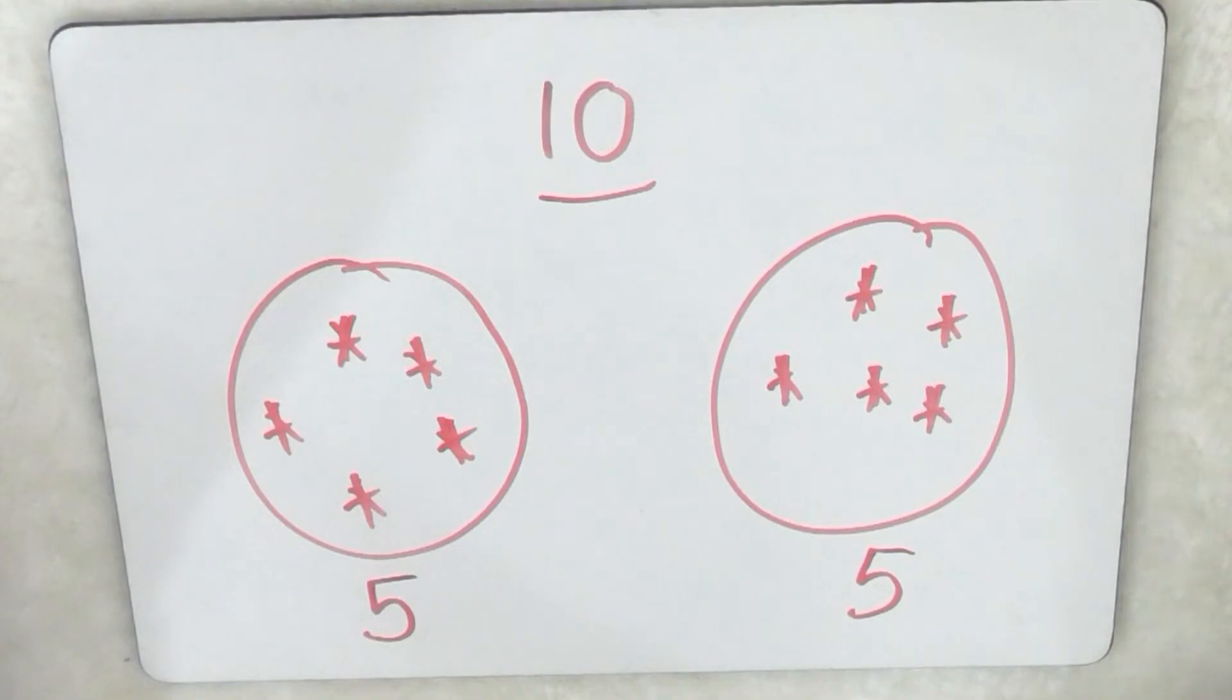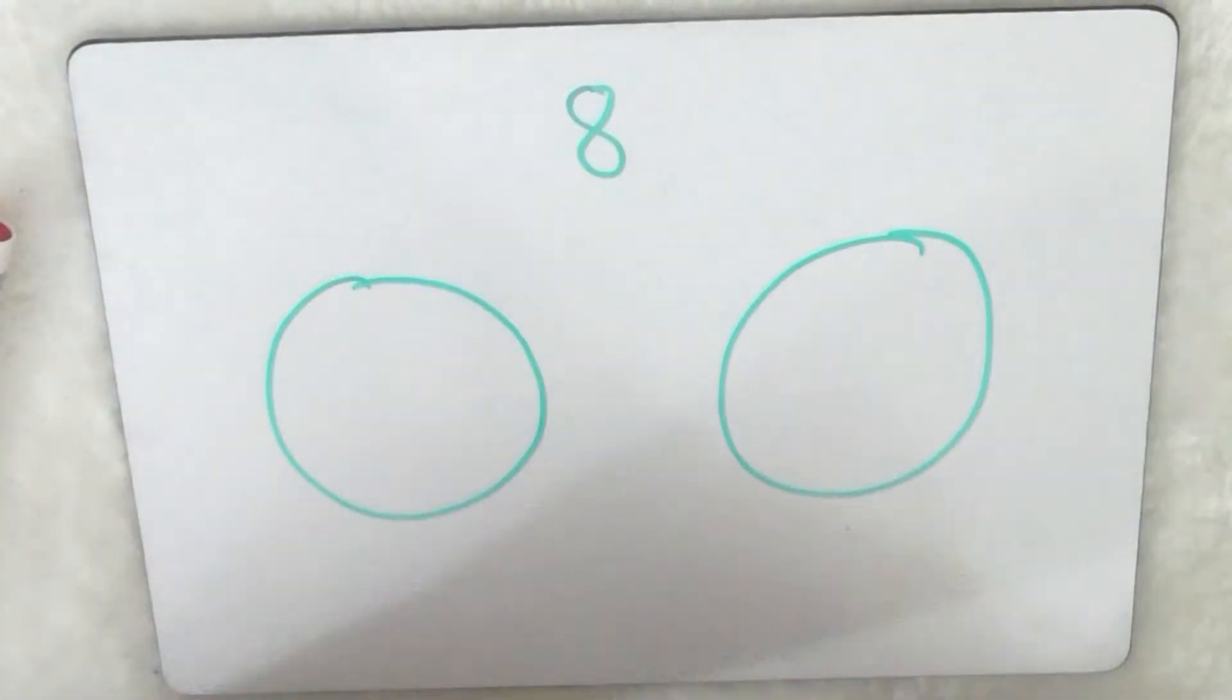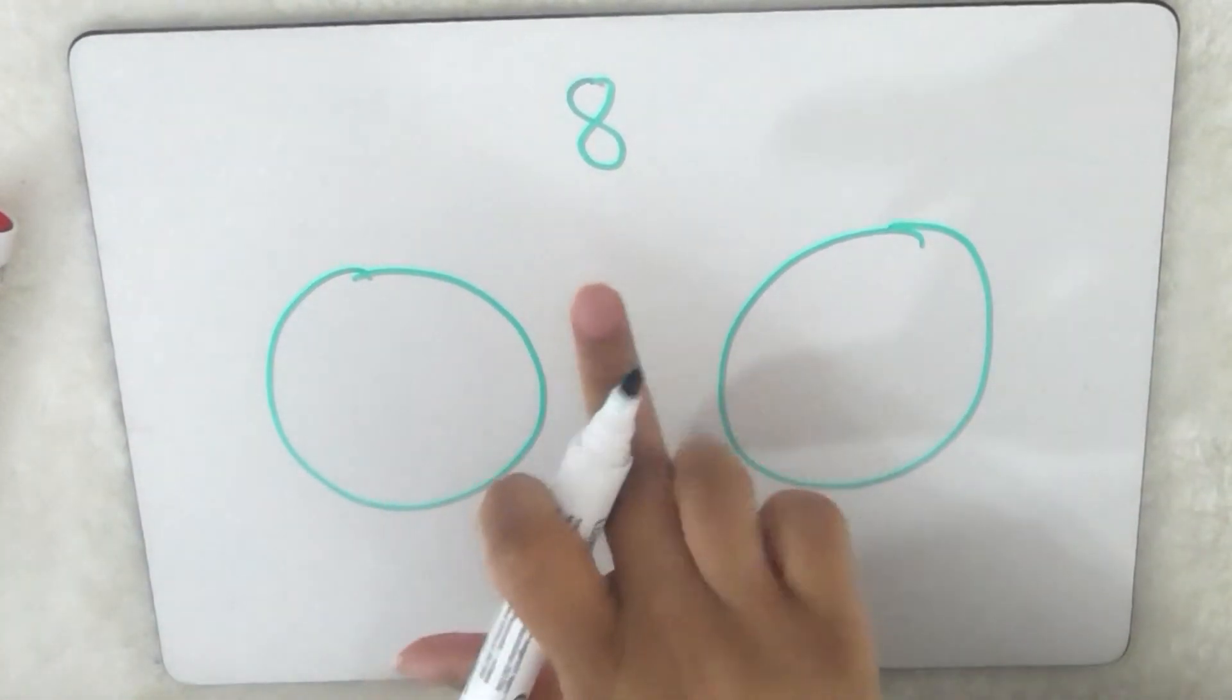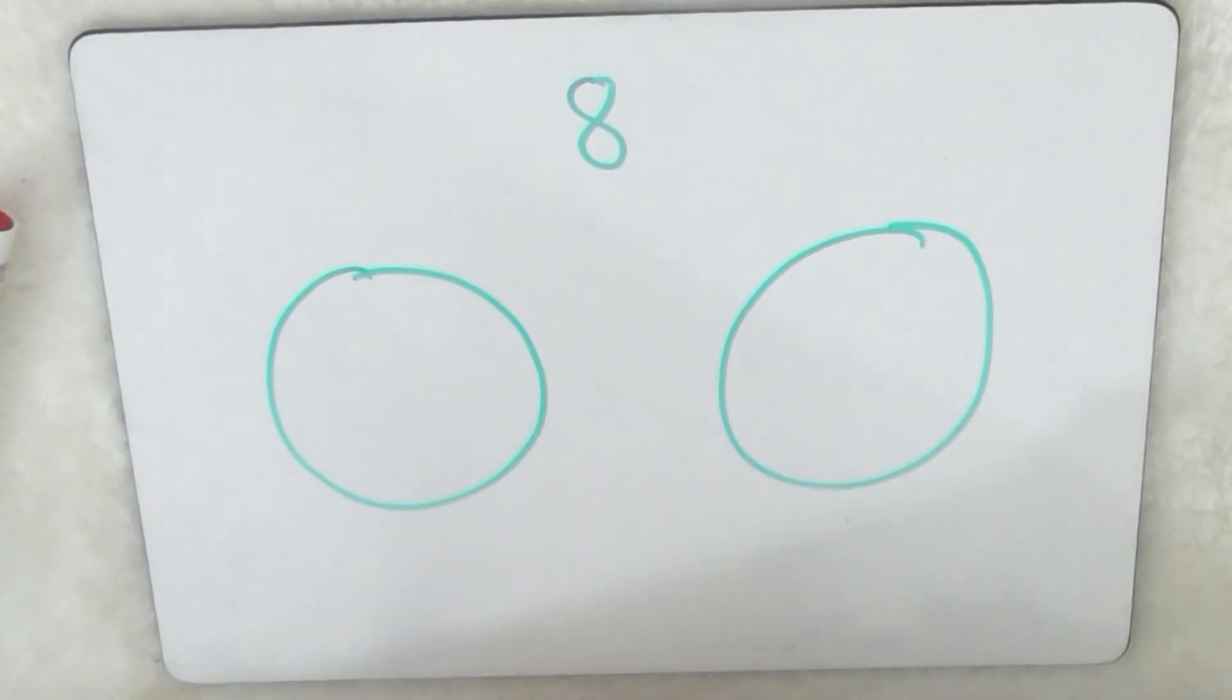Now I'd like you to have a go. I'm going to give you some sharing to do using some sharing circles just like I did. Okay, so your turn. I'd like you to share 8 between these two sharing circles. Off you go.